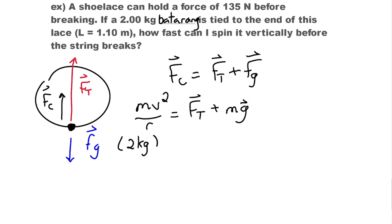Now I can substitute in my mass and I can substitute in the length of the rope, which is the same as the radius of the circle that the batarang will make. I'm going to substitute in my force of tension I had in the question and I'm going to substitute in the mass again and the acceleration due to gravity.